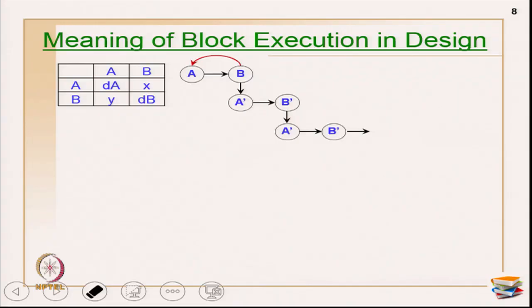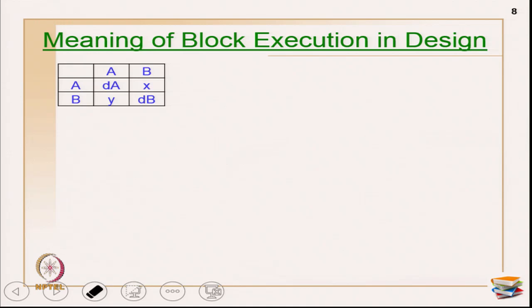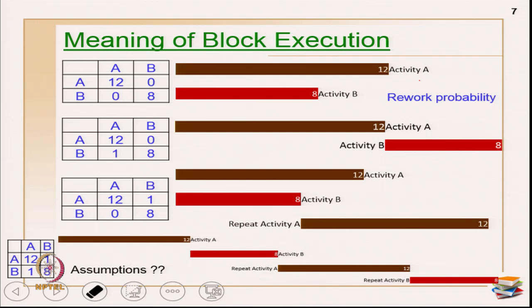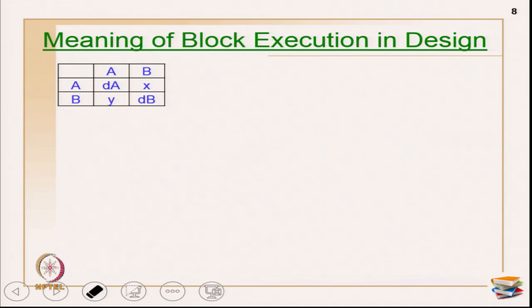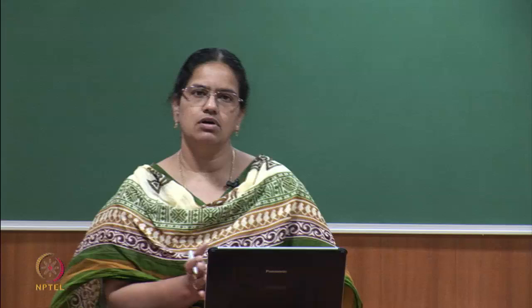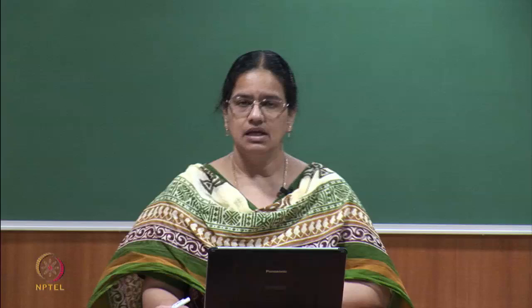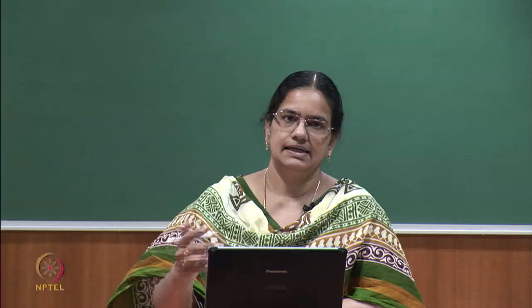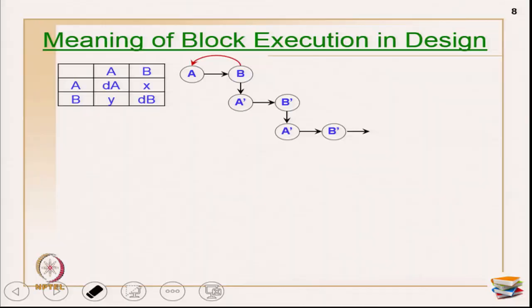Going ahead with the same example - what is the meaning of block execution in a design phase? We have to see what is the meaning of the block. In the last case I showed you what is the meaning of plotting the numbers, each number at different places with duration still the same. What are the minimum assumptions one should keep in mind to get a scheduling duration and understand block execution?